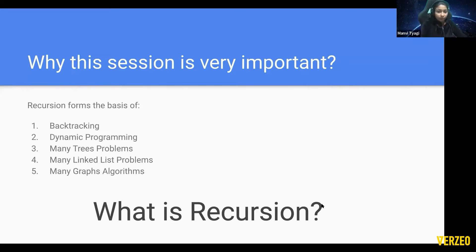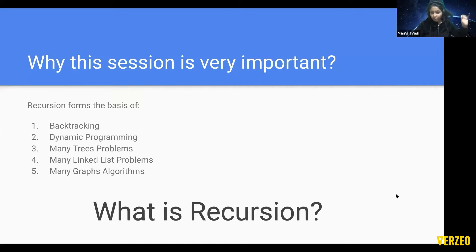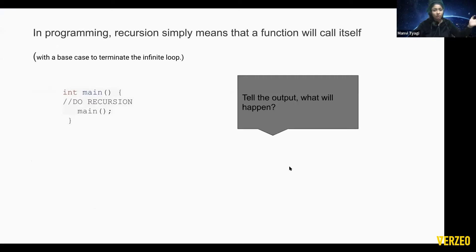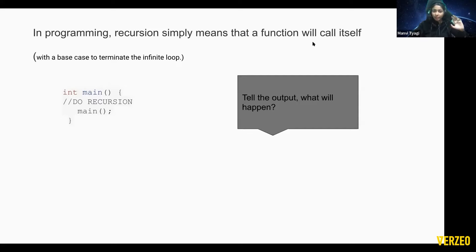Nobody defined recursion, which gives me the idea that people here are absolute beginners. Reading from the chat: 'the process by which a function calls itself,' 'a function calling itself,' 'calling back the same function.' Yes — effectively, recursion is calling a function inside the same function. In programming, recursion simply means a function will call itself. That's it in the most basic terms.